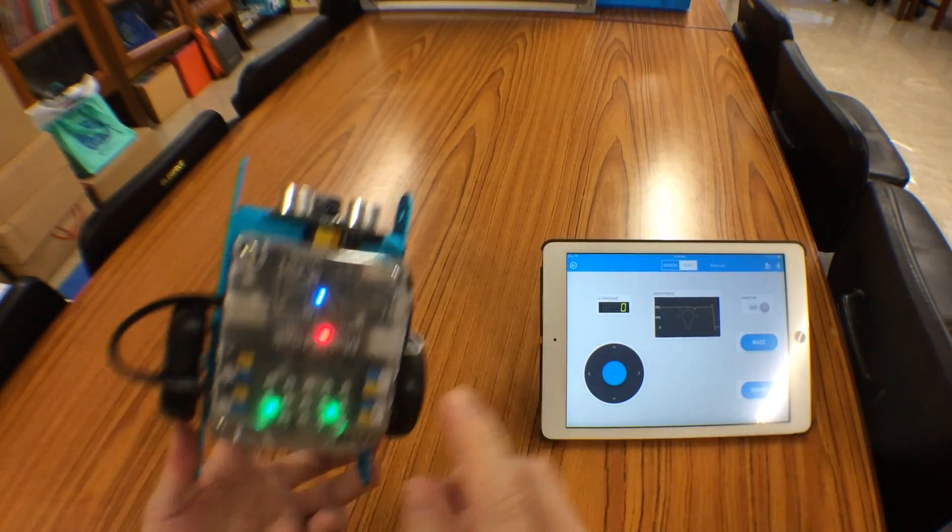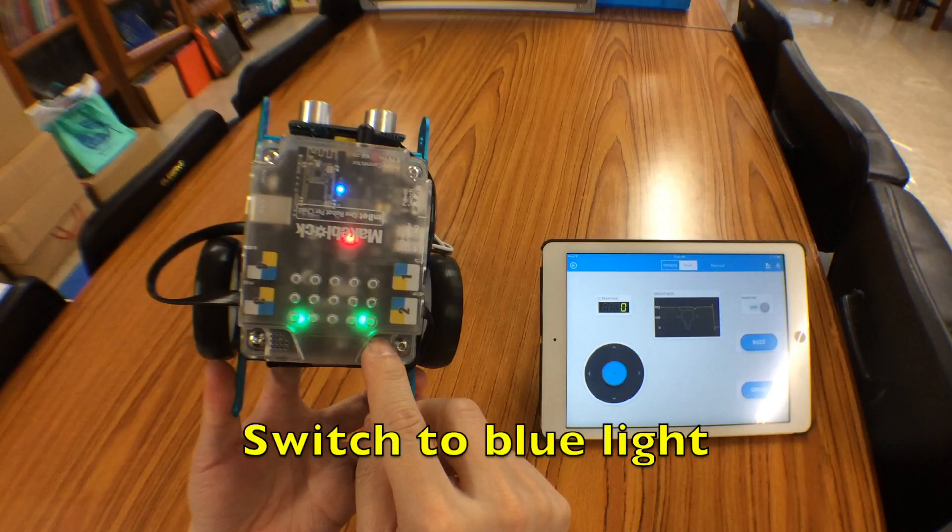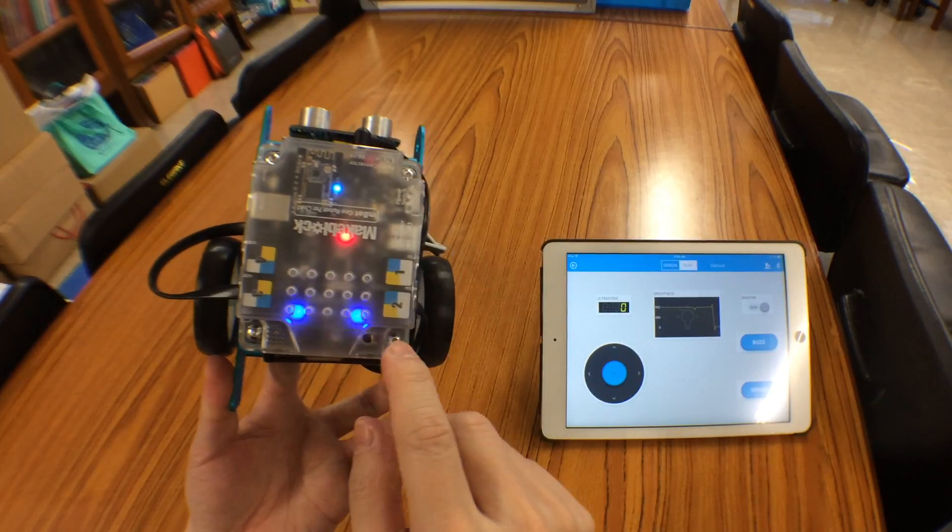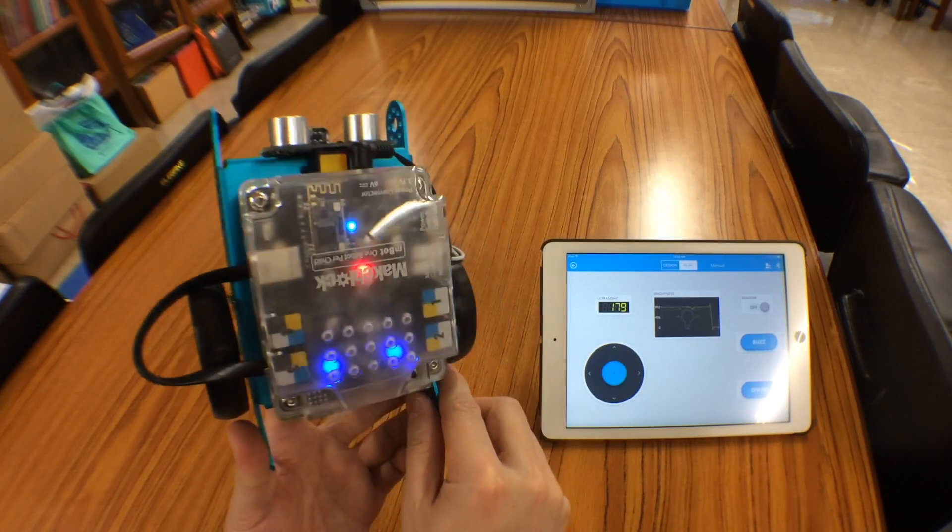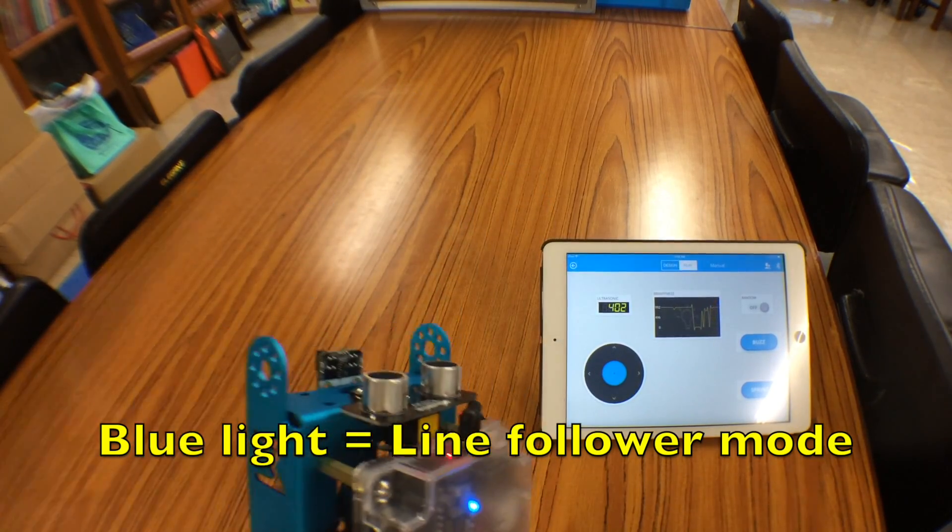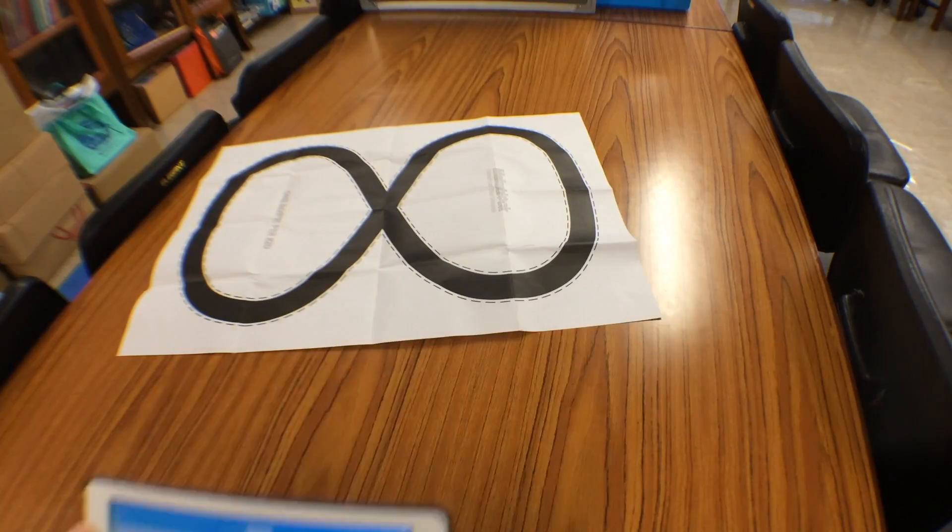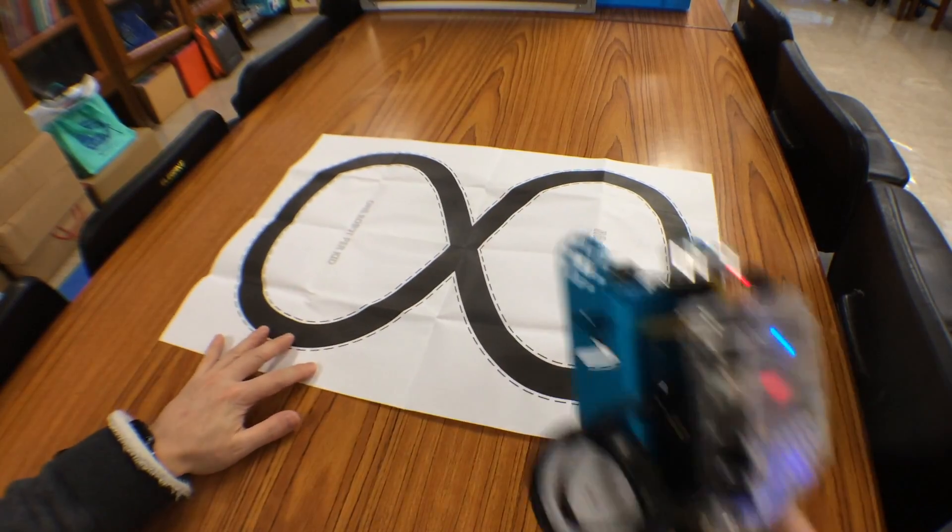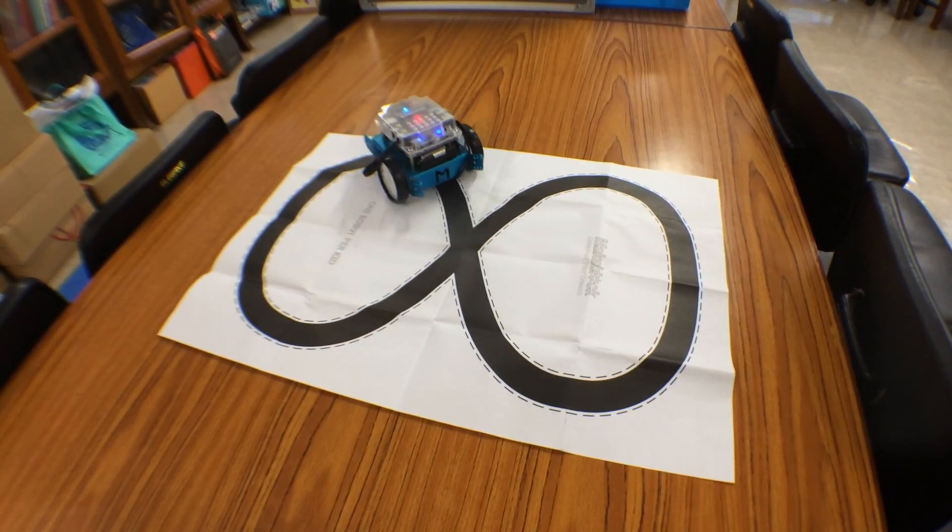And if I press this button again, it will turn to the blue light. That means it will enter the line following mode. So if I have a piece of white paper and we have some dark lines printed, it will follow the line.